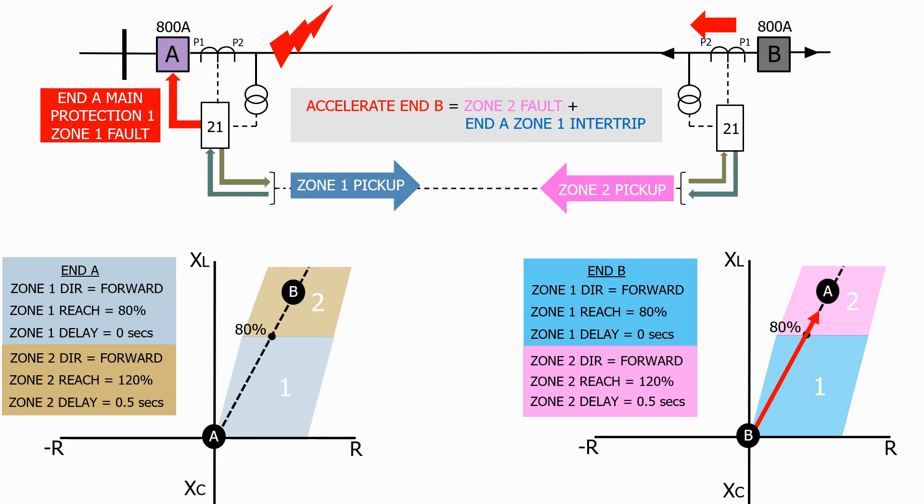On end B the relay sees the fault in zone 2, but because we've received a zone 1 pickup intertrip from the far end, we don't wait for the usual half a second but instead trip the circuit breaker on end B instantaneously as we're now 100% certain that the fault is located on the protected feeder, clearing the fault from the system.